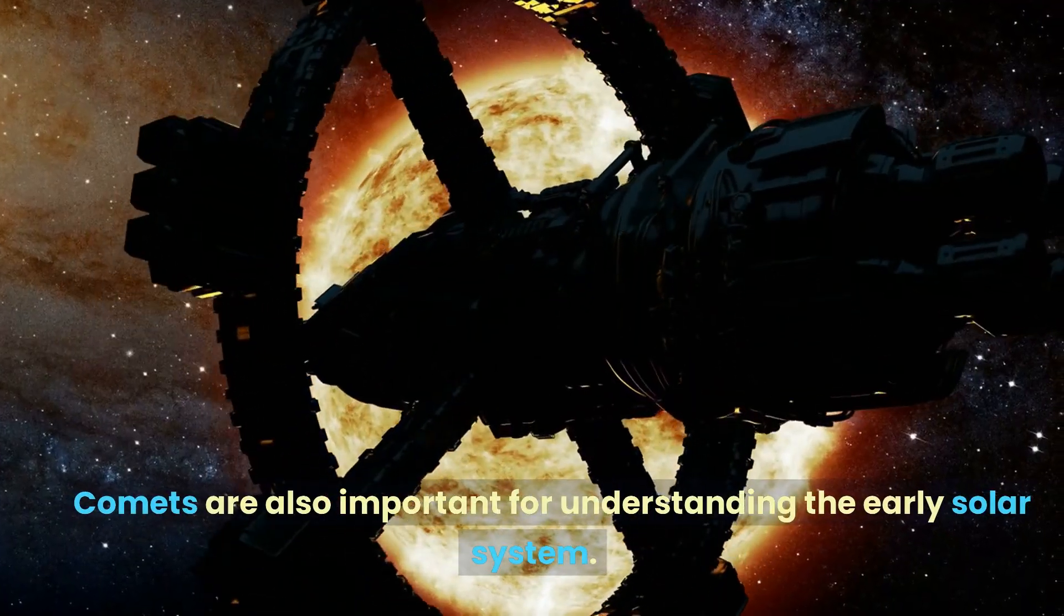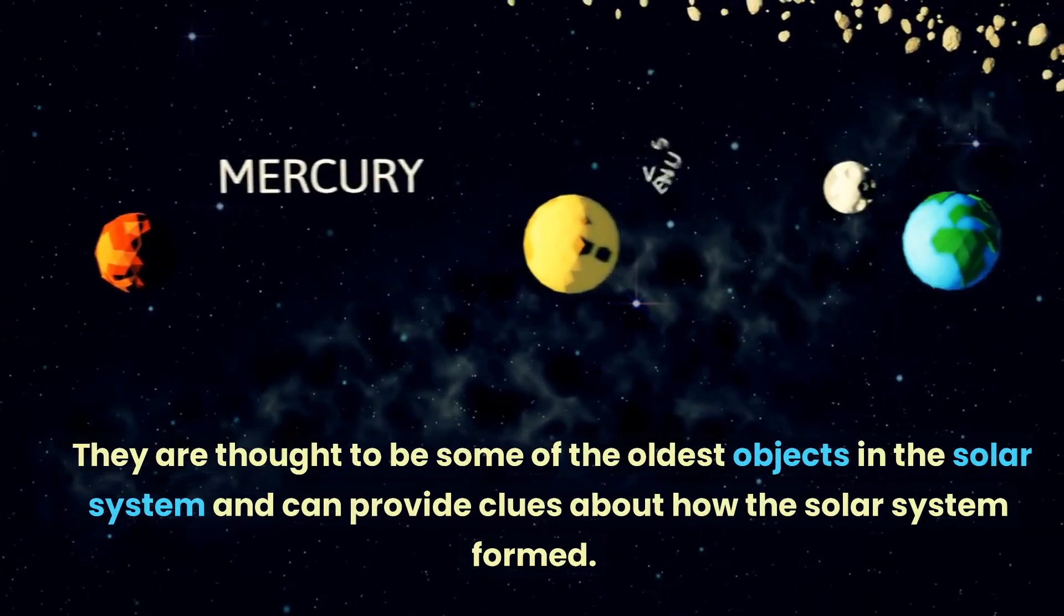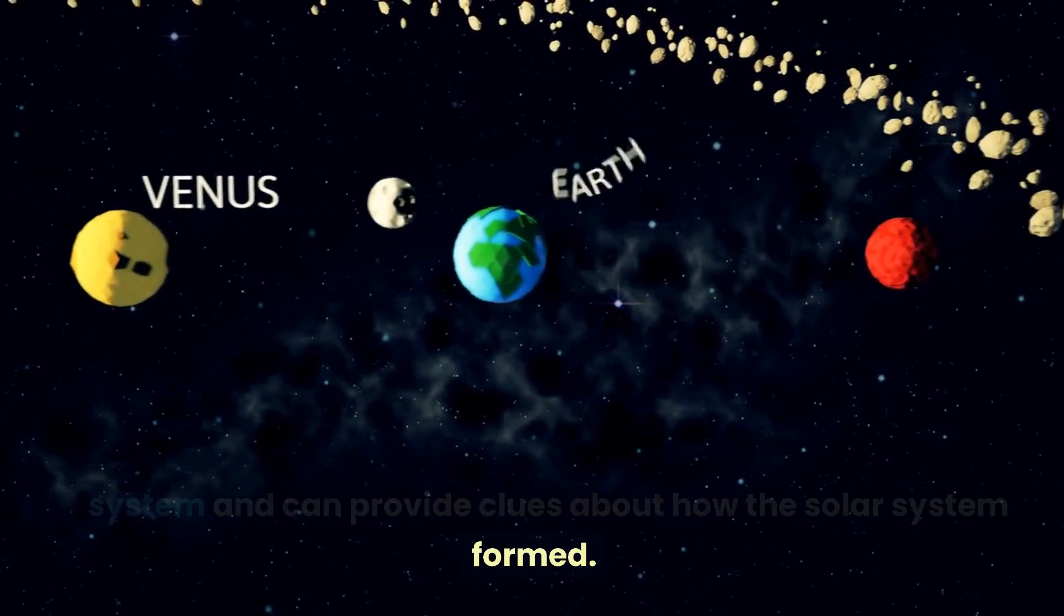Comets are also important for understanding the early solar system. They are thought to be some of the oldest objects in the solar system and can provide clues about how the solar system formed.